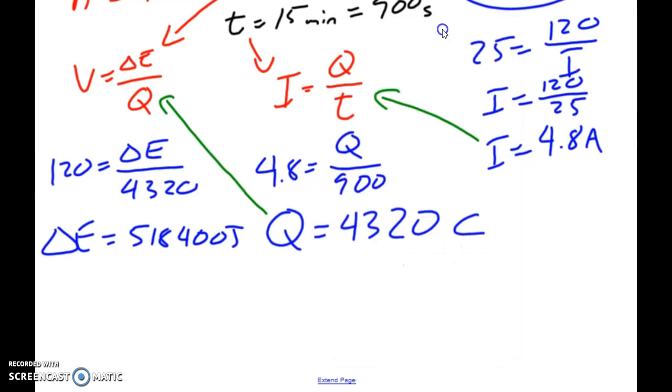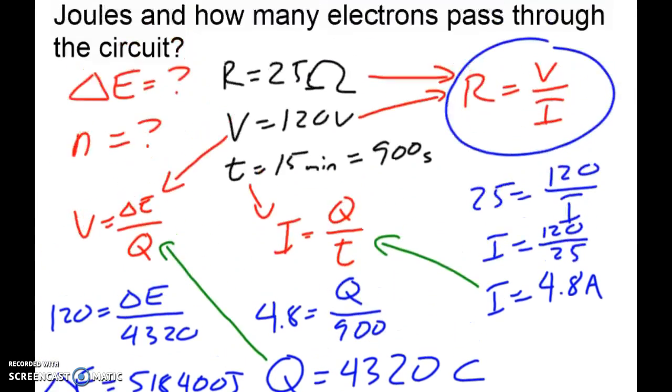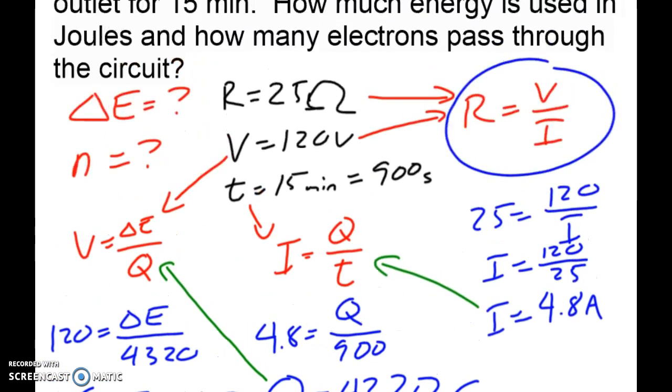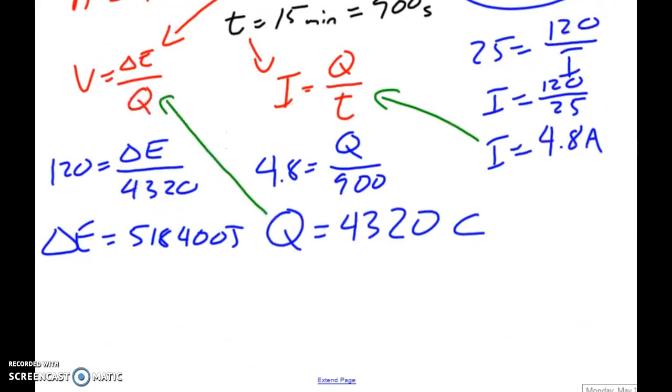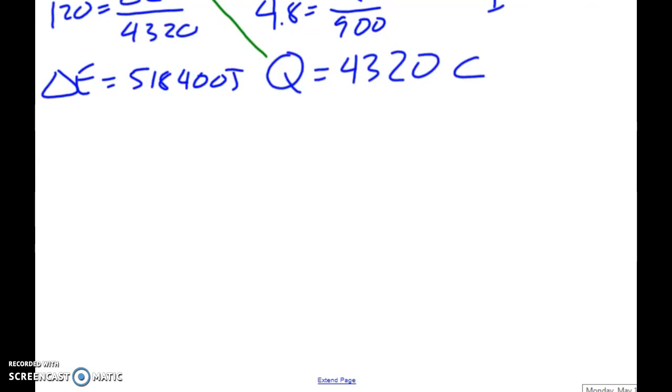Now have we solved everything we were looking for? Well if we go back up here, we can see that we've done this, but we haven't done this yet. So now we need to figure out the number of electrons that are passing through. So the equation we had that would work in this case is Q is equal to NE. So for what we found right here, we know Q is equal to 4,320 is equal to N times 1.6 times 10 to the negative 19.